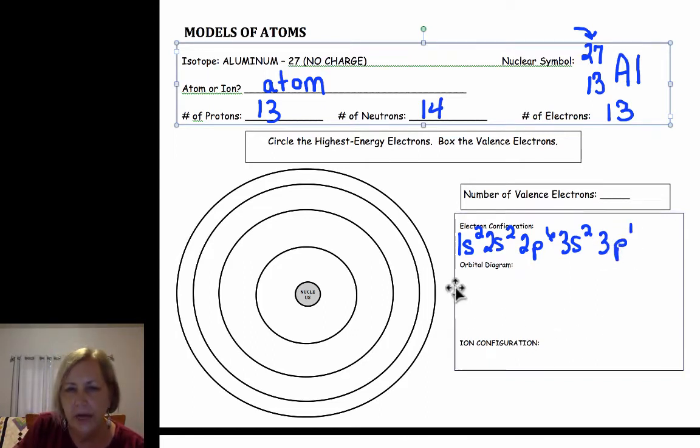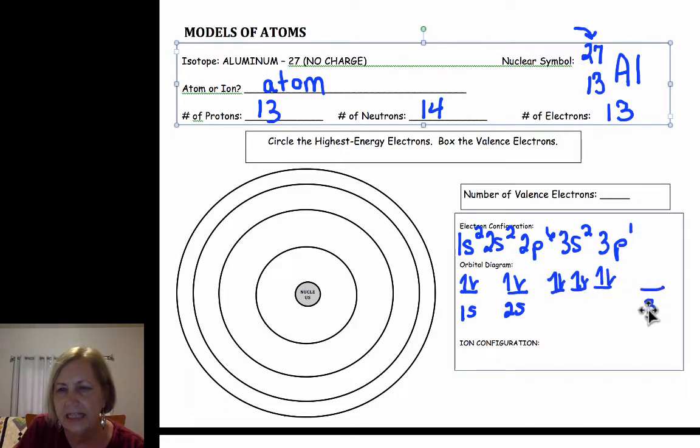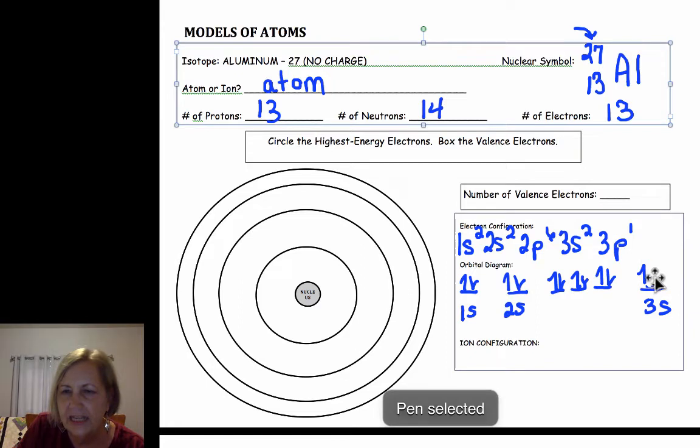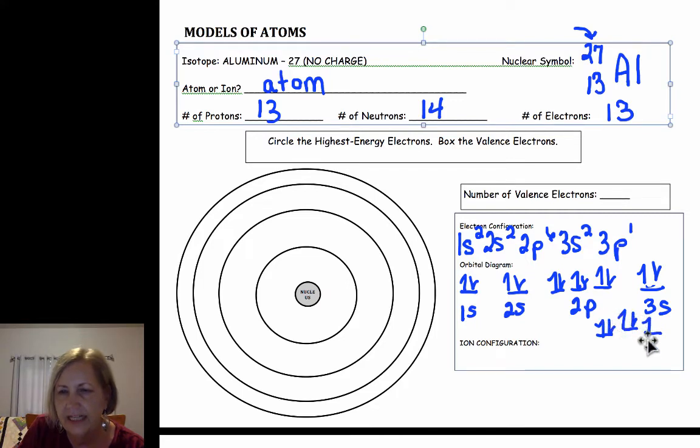Okay so its orbital diagram we could do with lines: one for the 1s, then the 2s, and one, two, three for the 2p, and then the 3s. Then finally we have our 3p, and it's got two electrons in that one, and then finally we have our 3p. There's only one 3p electron.